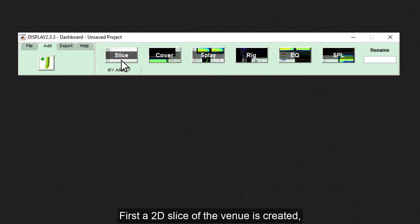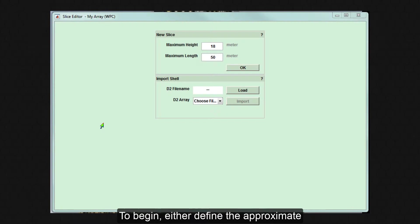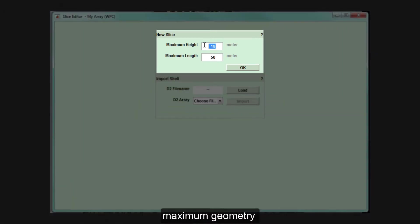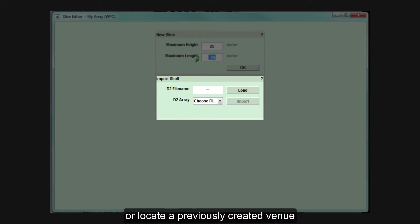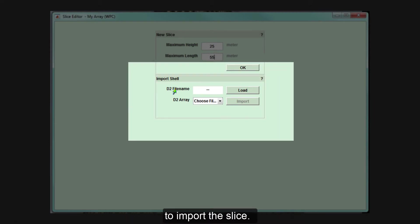First, a 2D slice of the venue is created, the predefined array added, and basic audience coverage is drawn. To begin, either define the approximate maximum geometry of the venue that will be drawn or locate a previously created venue to import the slice.